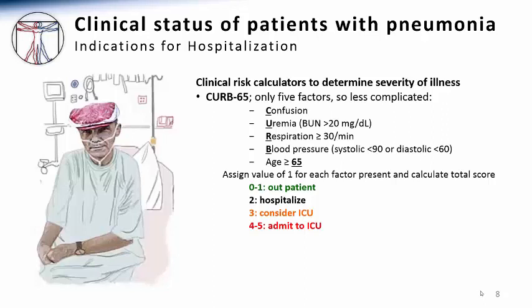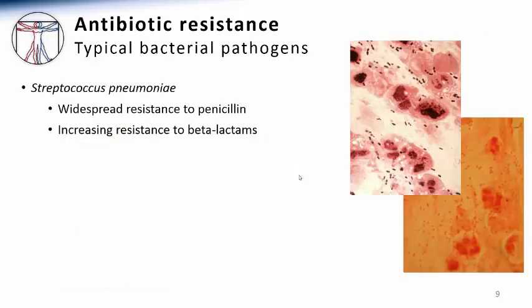The more of these factors that are present in an individual patient, the more aggressive one should be in terms of hospitalization, pursuing specific etiologies, and accelerating therapy. How do we actually choose among the many antibiotics at your disposal for those that are particularly helpful in treating pneumonia? Among the most common bacterial causes of pneumonia, there are several important microbial factors that drive our treatment decisions.